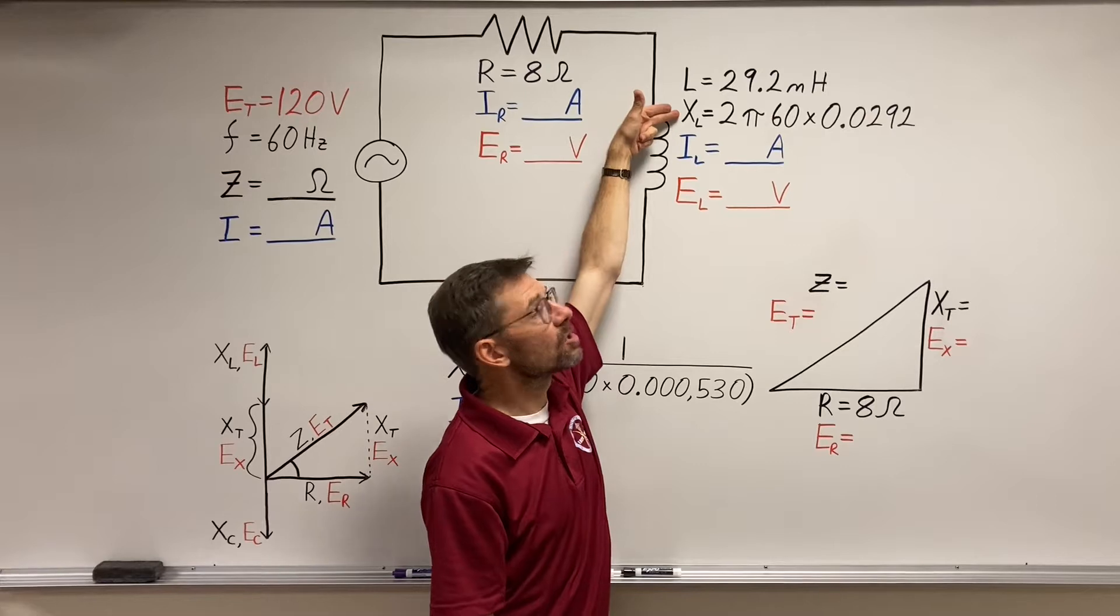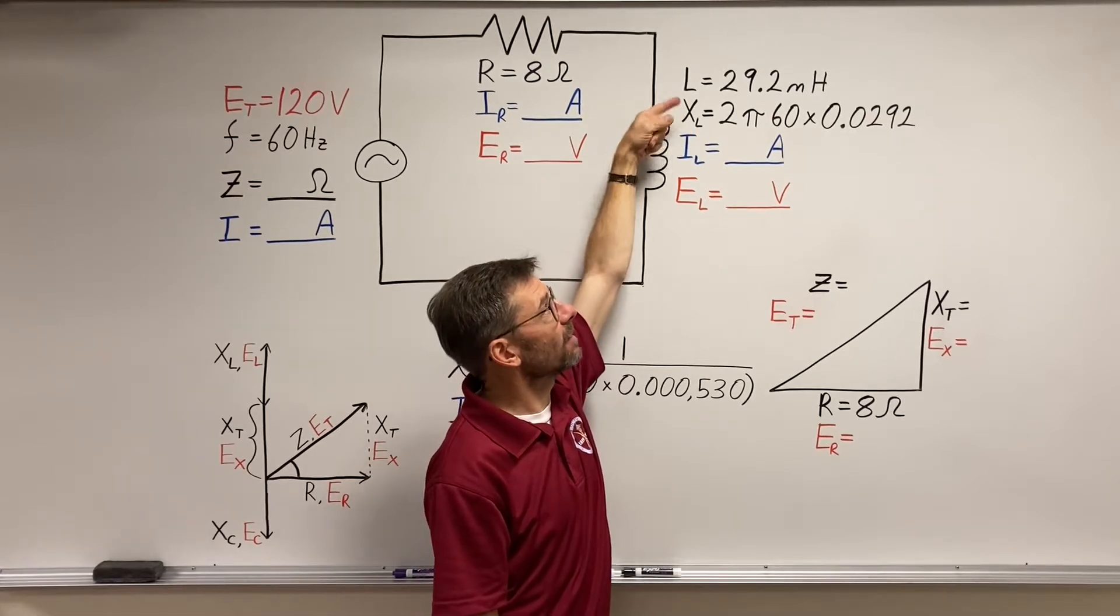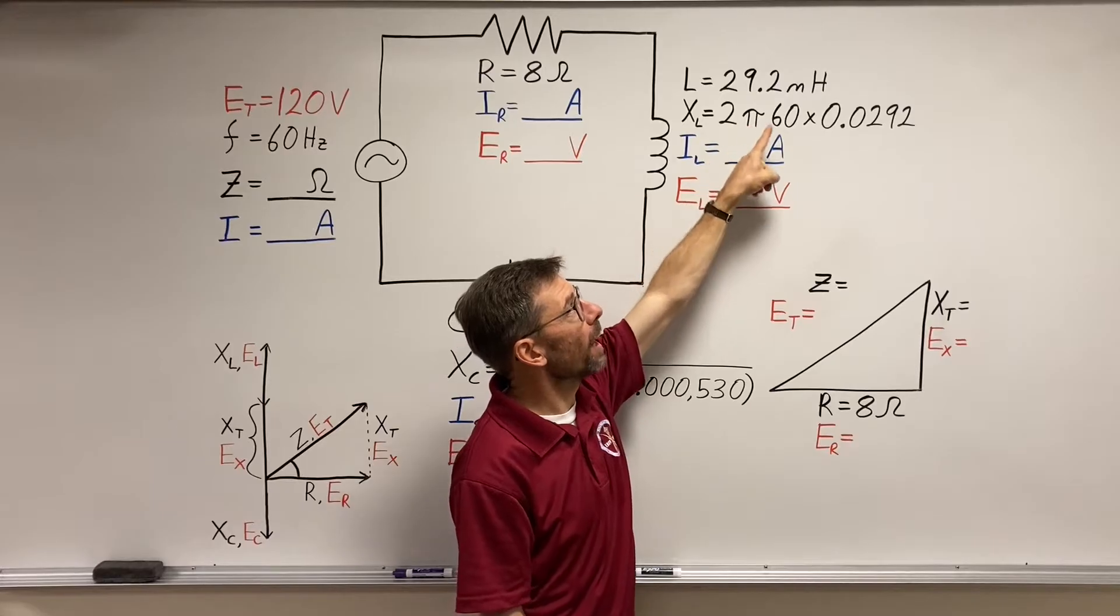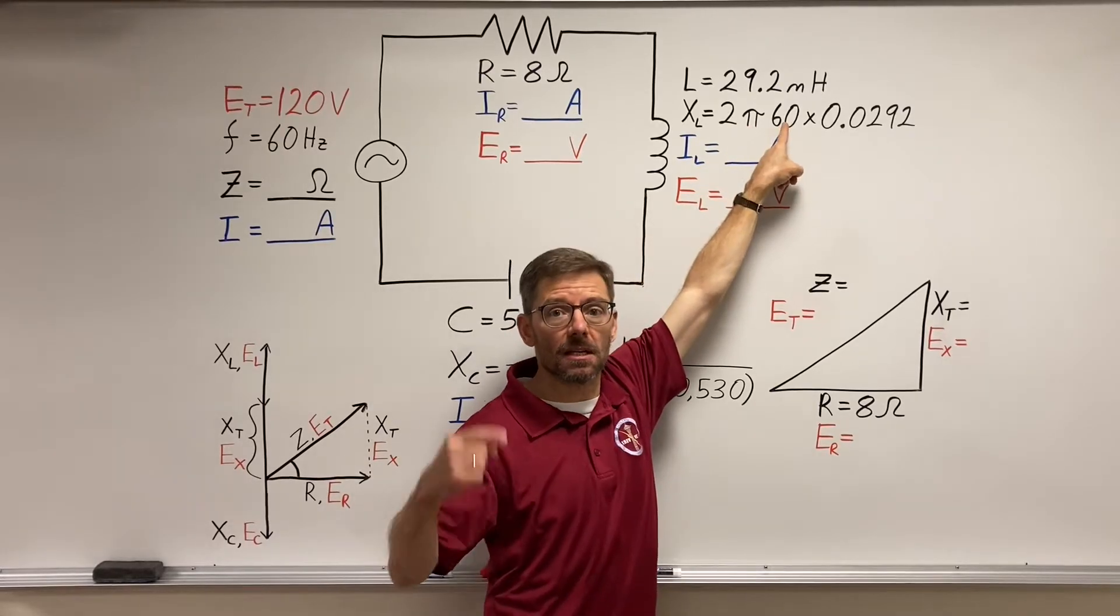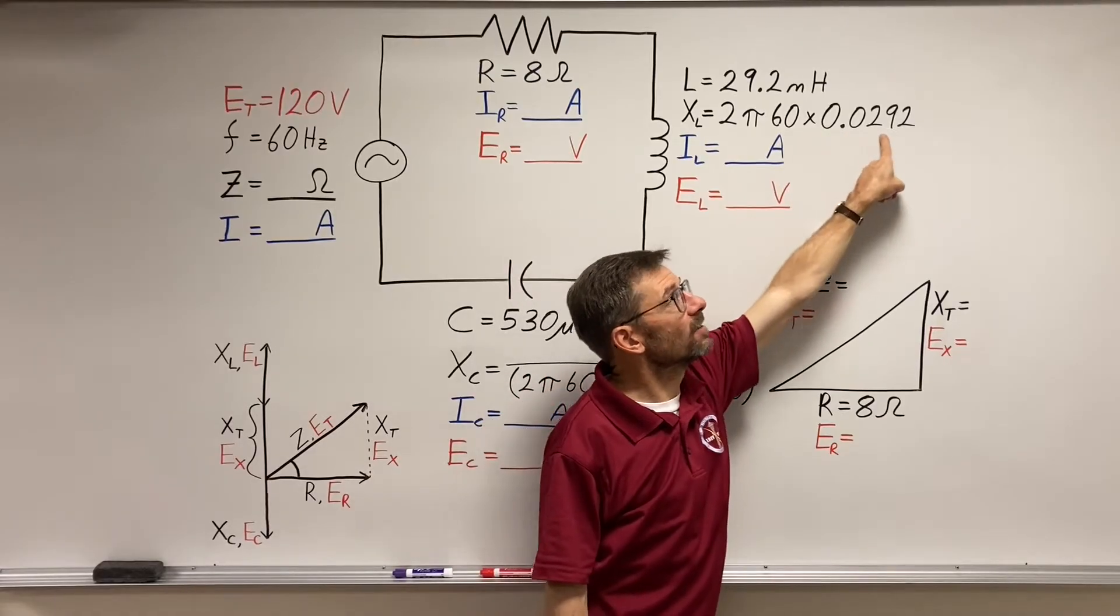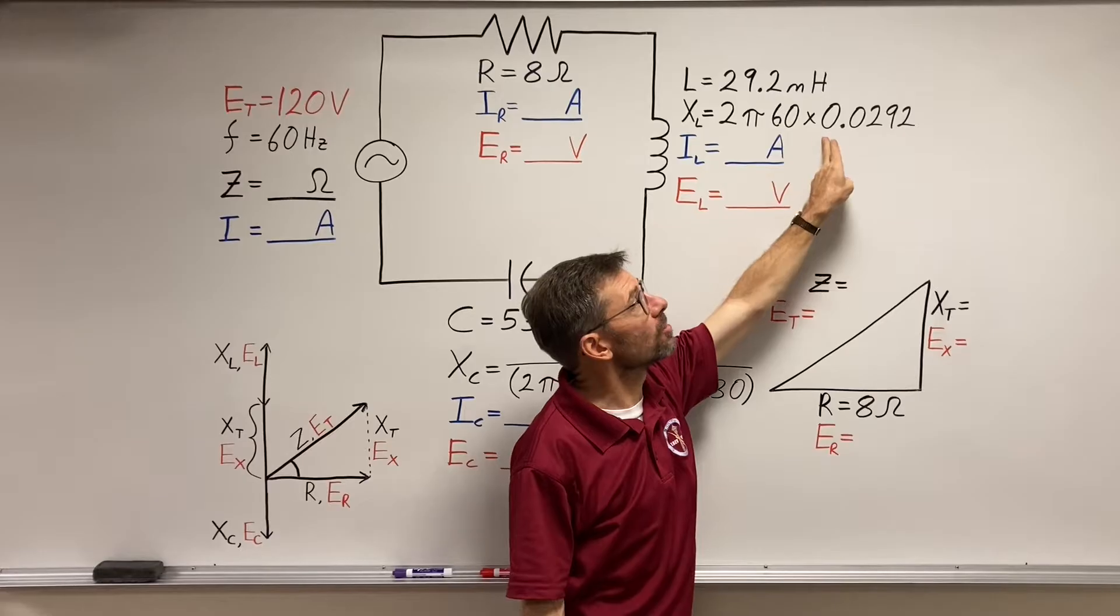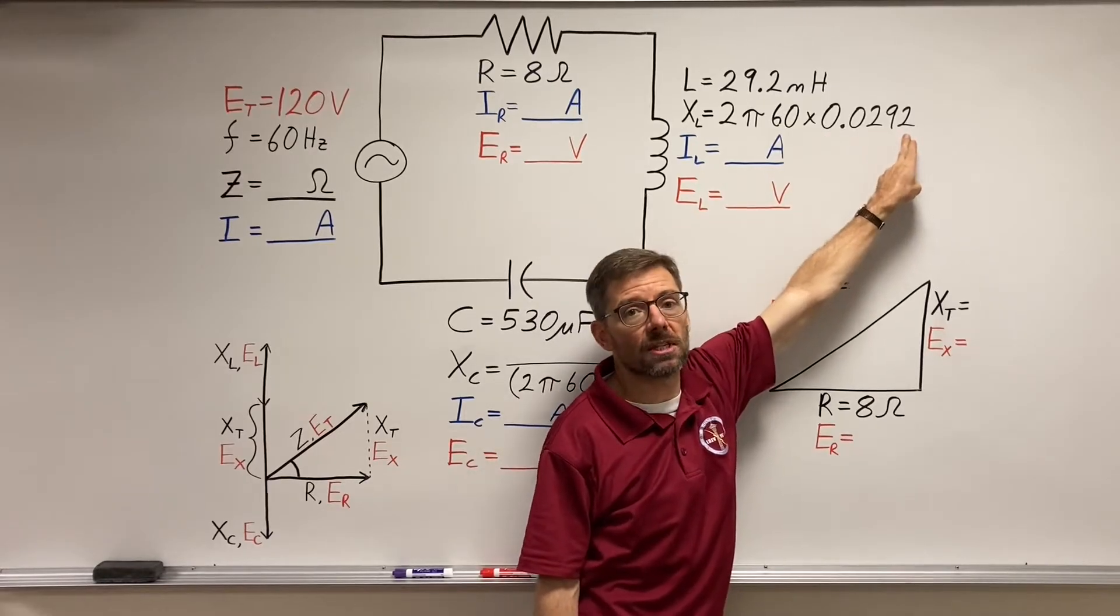Inductance, what's its ohmic value going to be? It's XL, inductive reactance. Two times pi times the frequency, over here 60 hertz, times the inductance in henries. Now there's shortcuts on the calculator, but I just spelled them all out so we can see the number clearly.